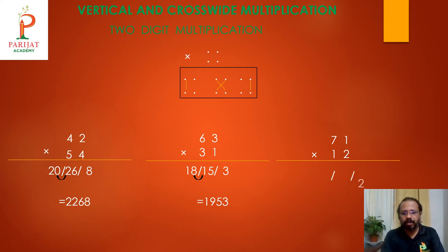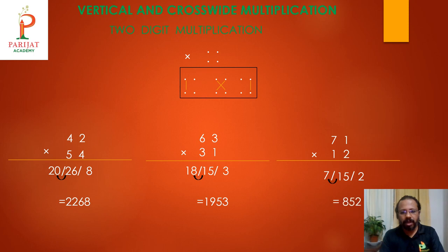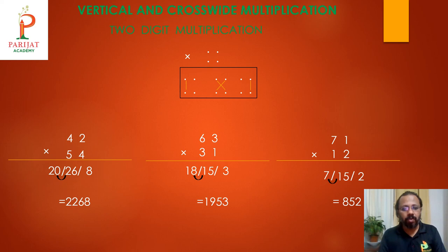Finally, 71 times 12. Last column: 2 ones are 2. Middle cross-connect: 7 times 2 is 14, plus 1 times 1 is 1, so 14 plus 1 is 15. First column: 7 times 1 is 7. One carries over into 7, giving the answer 852. Very simple — solve these multiplications at home!